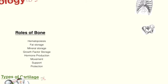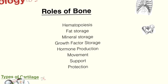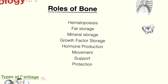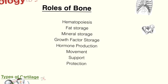Now that we've talked about cartilage, let's orient you to some of the major structures of the skeleton — namely, the bones. Let's talk about the roles of bone in the body. One of the first and most important roles is blood cell formation: hematopoiesis. This doesn't occur in all bones, but does occur in the red marrow of some bones.